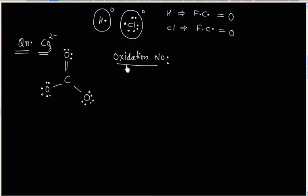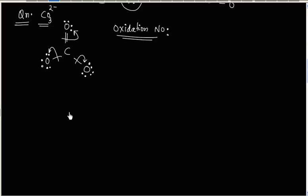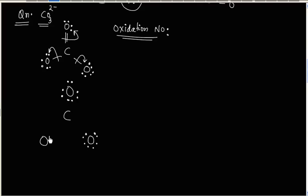Let us first calculate the oxidation number. For oxidation number, electrons in the bond pair are given to the more electronegative atom. So these electrons will be given to oxygen, because oxygen is more electronegative than carbon. Each oxygen will have 8 electrons — initially 4 electrons, plus 4 electrons coming from the bond pairs. So all three oxygen atoms will each have 8 electrons.